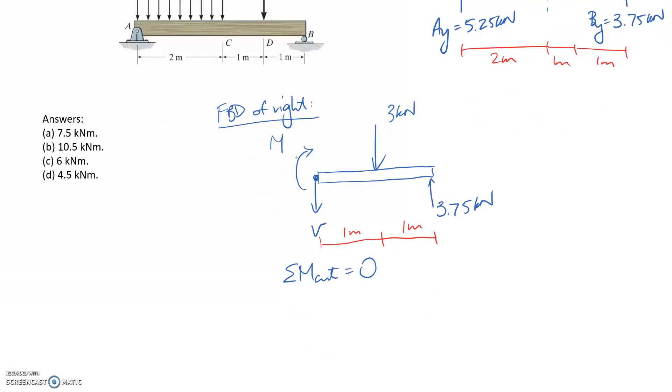We've got the applied moment, which I've drawn in the clockwise direction, so it's negative M. We've then got three kilonewtons acting at a distance of one meter, also going clockwise, so it's negative. And we've got the 3.75 acting at a distance of two meters, which is going to push anticlockwise, so it's positive.